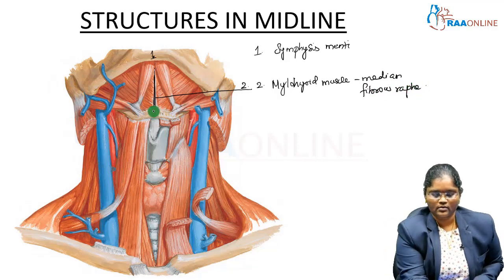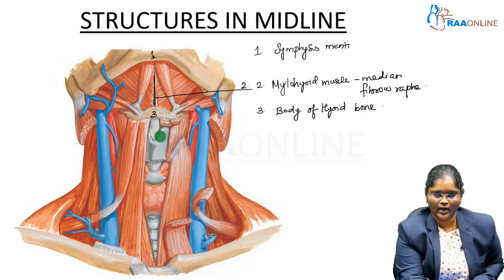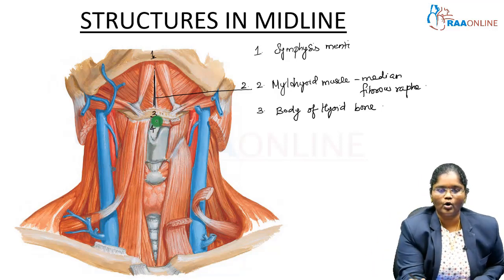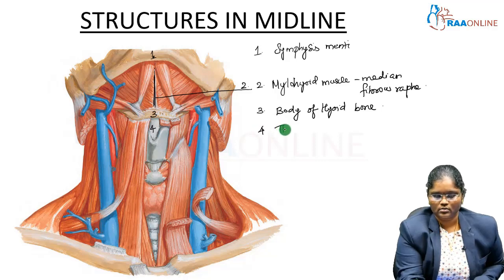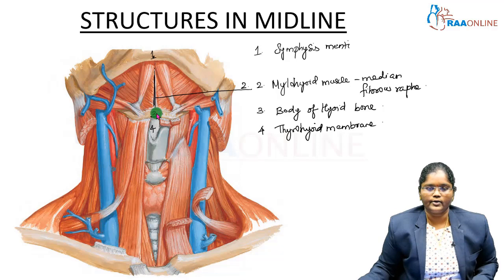The third structure is the body of the hyoid bone. Just below the body of the hyoid bone you can see a membrane connecting the hyoid bone and the upper border of the thyroid cartilage — that is the thyrohyoid membrane. There is also a bursa between the hyoid bone and the thyrohyoid membrane, called the sub-hyoid bursa.